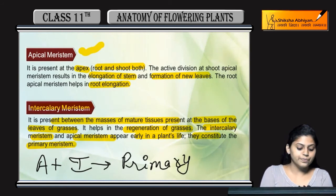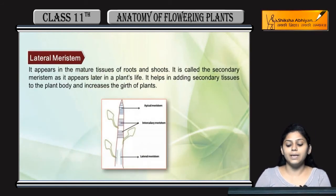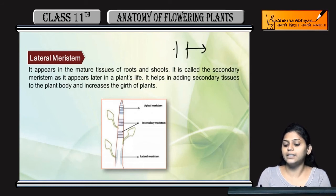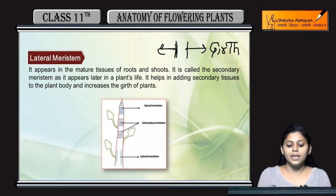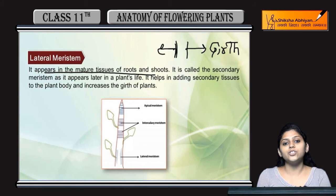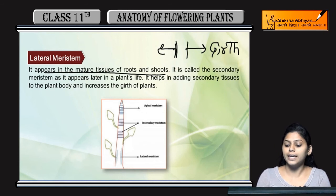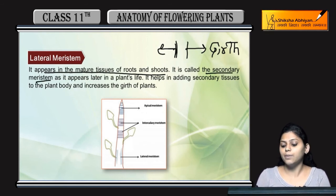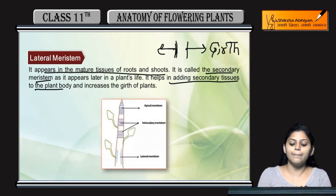Whereas, joh lateral meristem hai — lateral meristem kya kerta hai? Lateral growth kerta hai, girth baData hai, girth increase kerta hai. Appear kaha hota hai? In the mature tissues of roots and shoots. Girth ko baData hai. Inhe secondary meristem bolte hai, kyo? Because they help in adding the secondary tissues to the plant body.